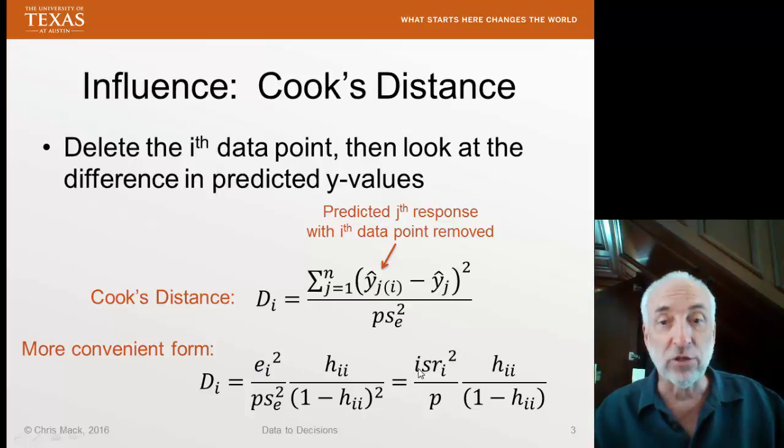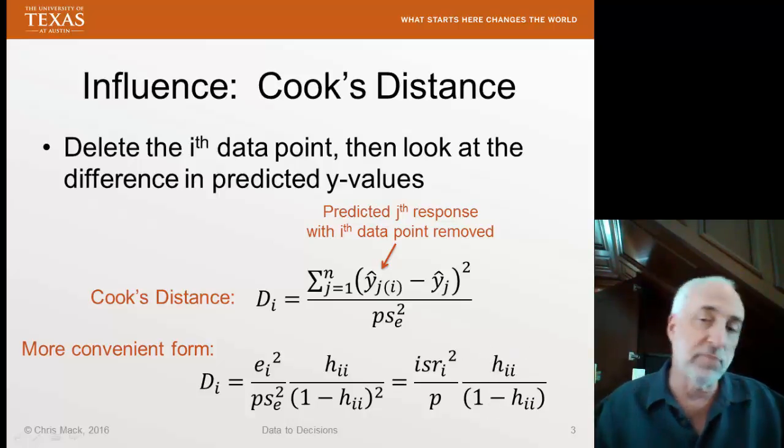You might think that's kind of a cumbersome item to calculate because I have to fit the model n plus one times, one time with all the data points, and then a separate time with every single data point removed to get all of the Cook's distances for every data point i. Quite cumbersome. However, it actually is easier than it looks because we can reformulate this. It's a bit of an extended derivation to show that this is true, but we can reformulate it in terms of the residuals themselves. So either of these formulas work. The simplest one is this one. I take the internally studentized residual, the i-th data point, I square it, divide by p, and then multiply by the leverage over one minus leverage.